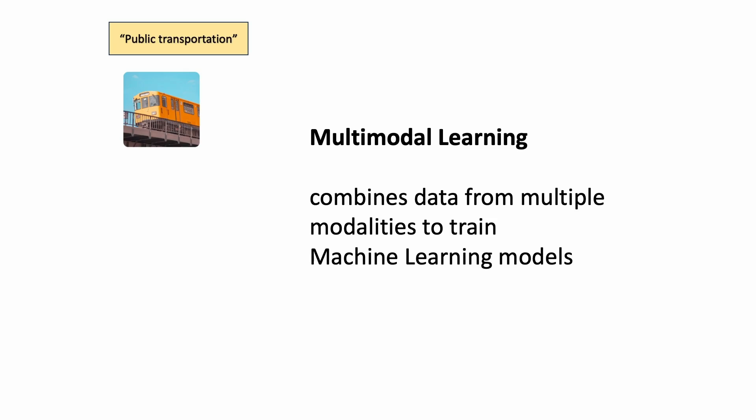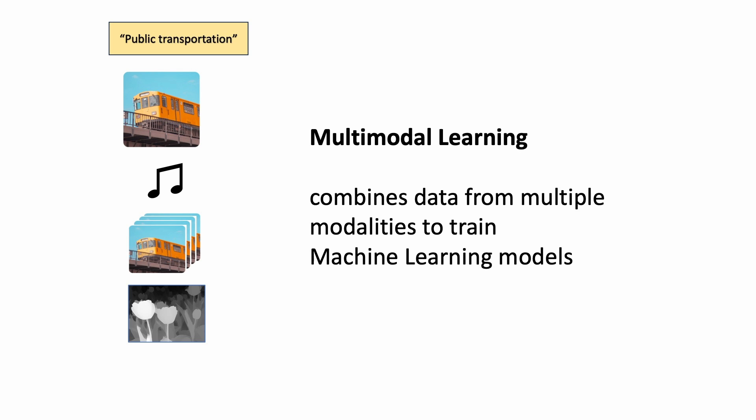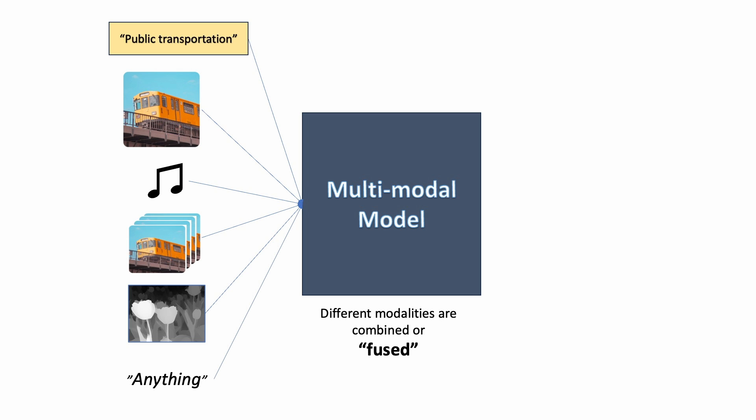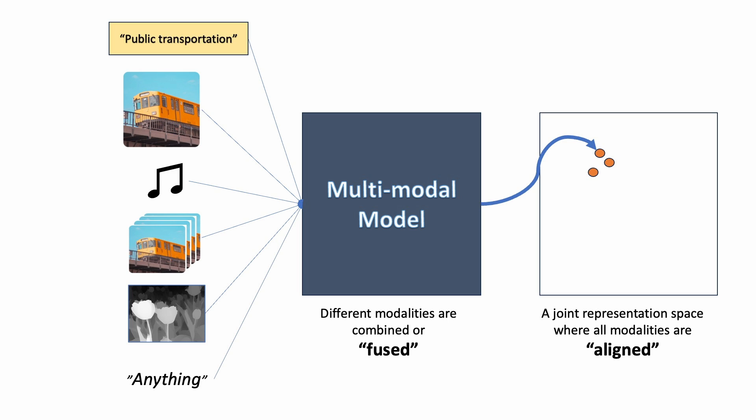In multimodal settings, the input data can include information from multiple modalities, such as text, images, audio, video, heat maps, 3D volumetric data — anything. The goal of multimodal modeling is to learn the dependencies and relationships between these different input types and then align each of them to a joint representation space where these different modalities can effectively interact, enhance, and complement each other.